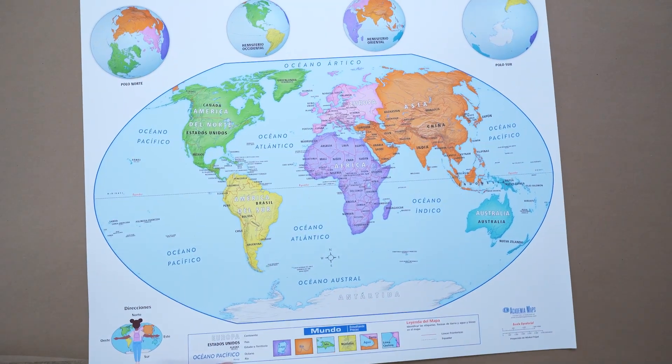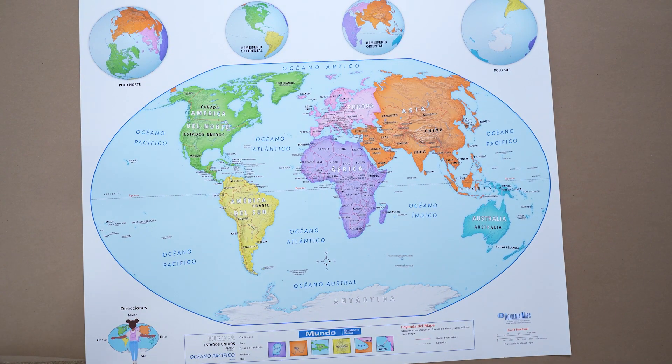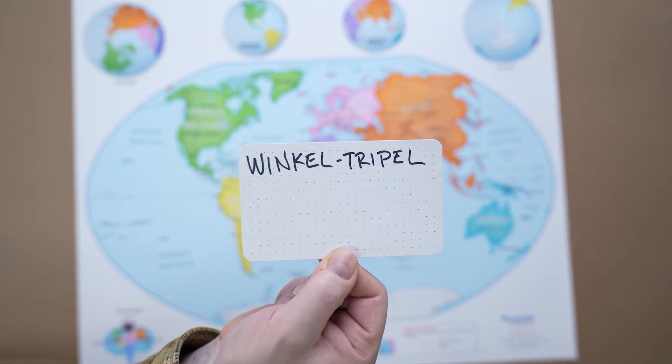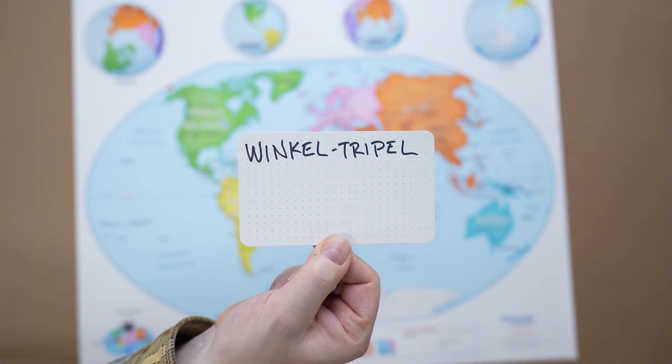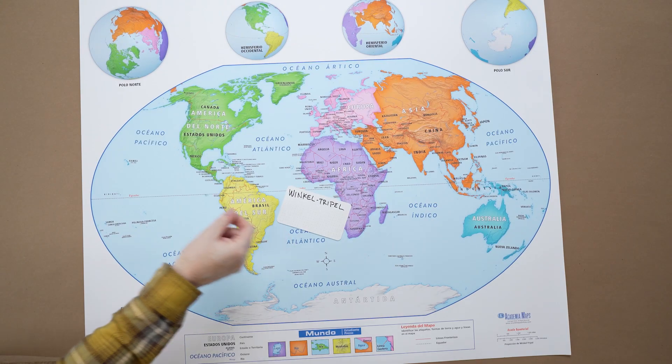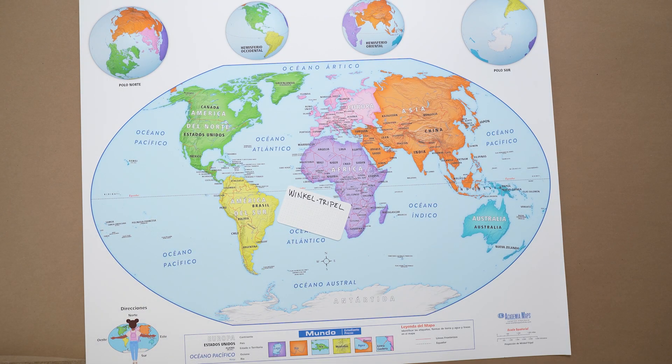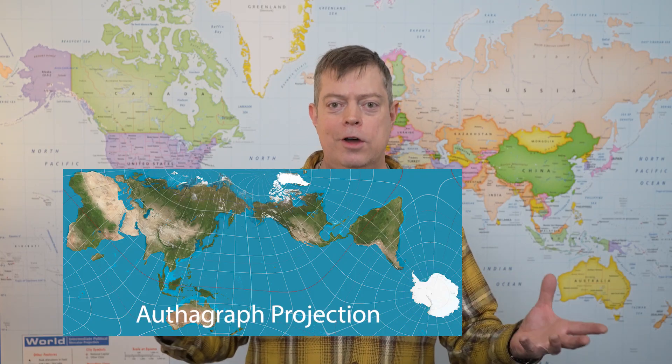This is the Winkel Tripel. Another compromise projection that tries to minimize distortion of size, shape, and distance all at once. This is what National Geographic uses now. And there are even more experimental ones, like the Dymaxion, which tries to unfold the globe like origami. Still pretty niche, but interesting.